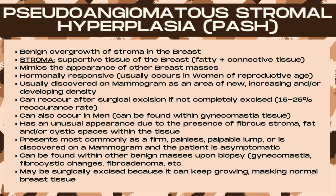The stroma is the supportive tissue of the breast — the fatty and connective tissue. PASH is a hormonally responsive mass, usually occurring in women of reproductive age, and commonly discovered on mammogram as an area of new, increasing, and/or developing density. It can reoccur after surgical excision if not completely excised, and 15–25% of these do reoccur.